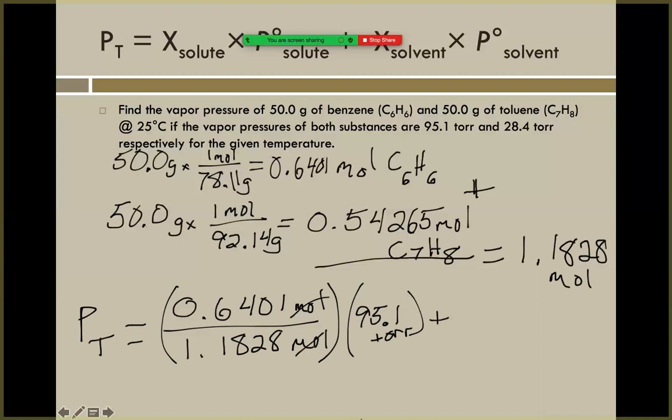We're going to add to that the pressure coming from our toluene. Our toluene mole fraction is going to be that 0.54265 divided by the total moles, which is our 1.1828, and then we multiply by its original pressure, which was from above the 28.4 torr.